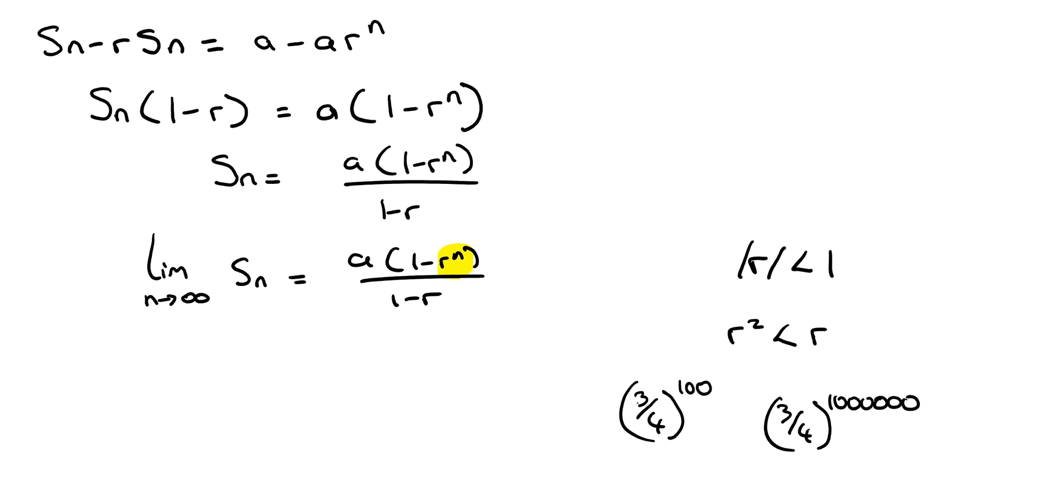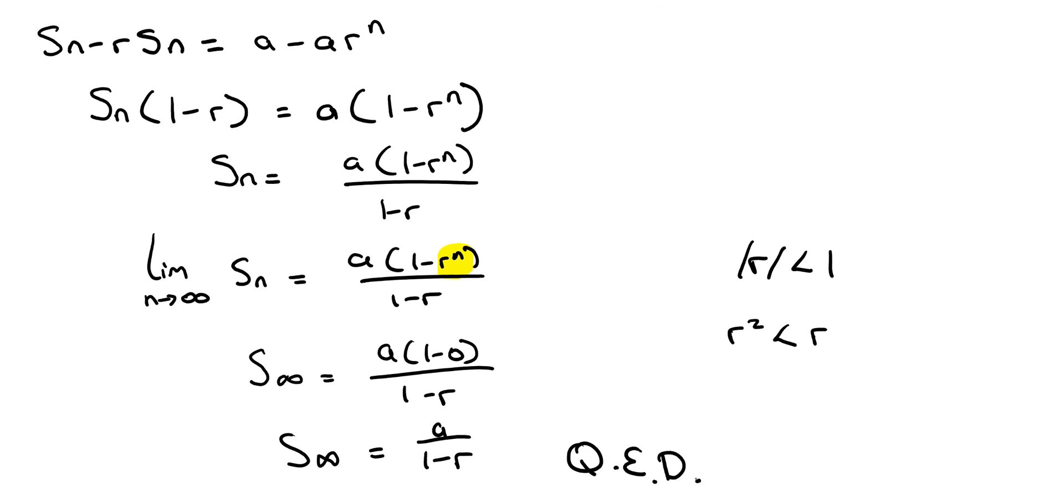And the bigger the power gets, the closer it will get to being zero. So that yellow highlighter there ends up being zero, so we end up with S infinity is equal to a times one minus zero over one minus r. S infinity equals a over one minus r.